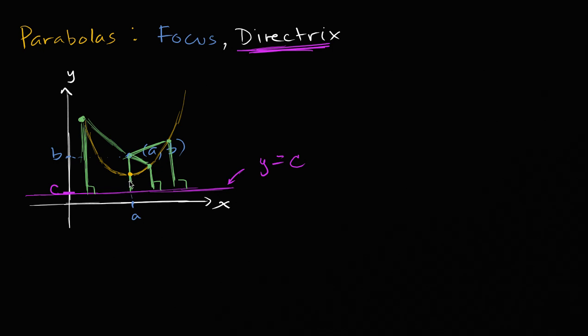So that's all a focus and a directrix is. Every parabola is going to have a focus and directrix, because every parabola is the set of all points that are equidistant to some focus and some directrix. So that's what they are.